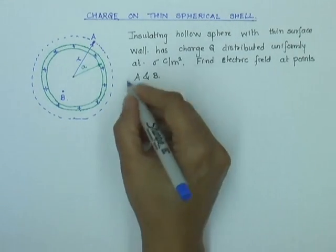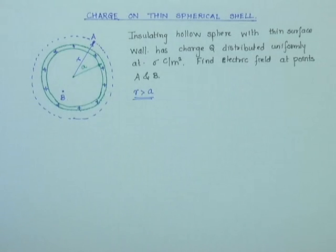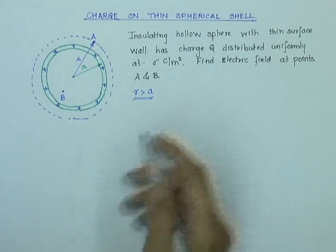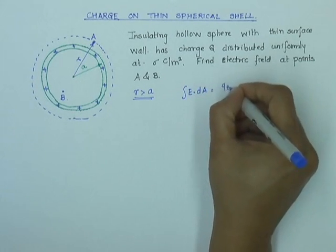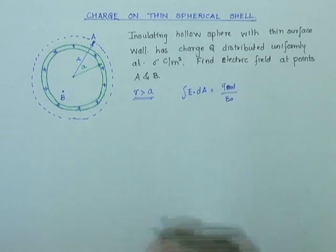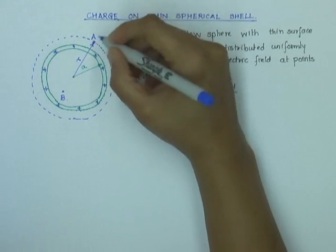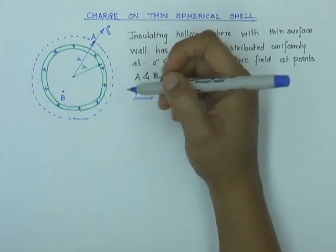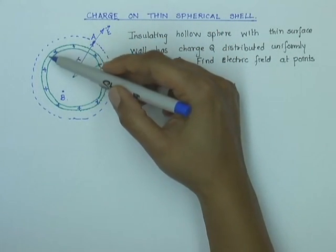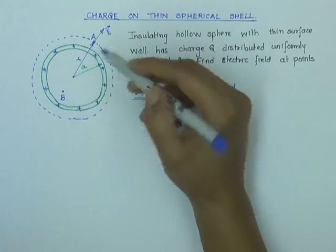For R is greater than A case, where point A lies outside my hollow sphere, I can write Gauss's law as integral E dot dA equals Q enclosed over epsilon zero. Let us see if this choice of Gaussian surface makes sense. Because this is a spherically symmetric charge distribution, E at every point here is radial. This is going to be my electric field at each point on my Gaussian surface. Since it is a uniform charge distribution, E at every point distance R is going to be uniform.